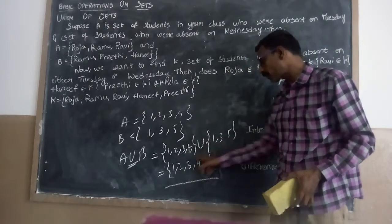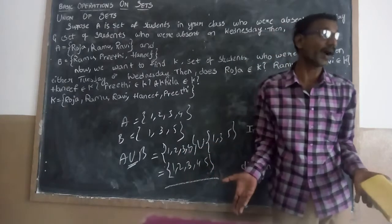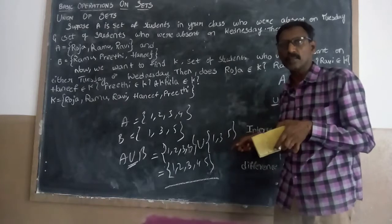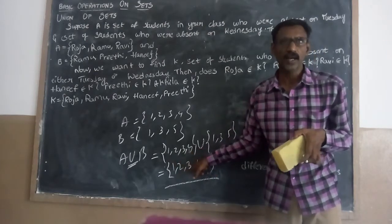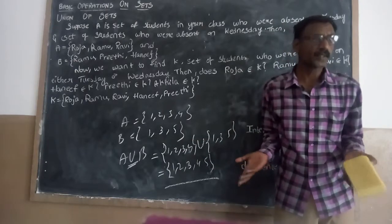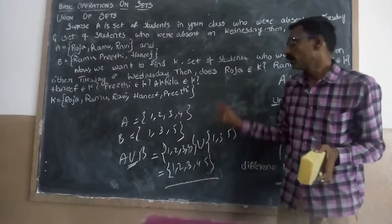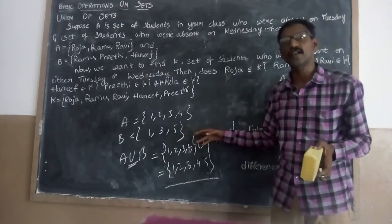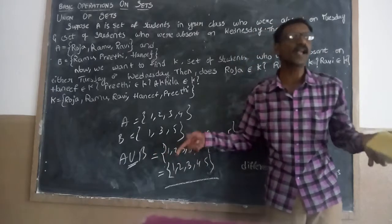A student asks: why do we take 1 only one time even though it appears twice? Union means those elements which are in A or in B — you should write each only one time. The elements in A union B are those elements which are in A or in B. They may be in A, they may be in B. You write them down only one time. If it is repeated, you still write it only one time.